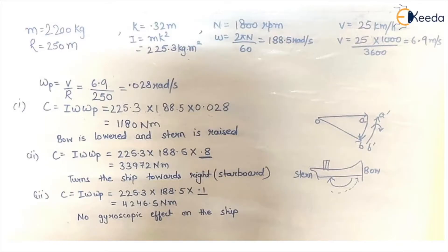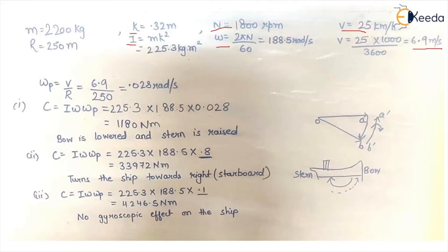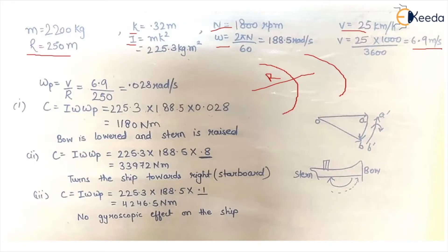First, we write all the given data: mass, radius of gyration k, and n, so we can calculate omega = 2πn/60. The velocity of the ship's turn is 25 km/h; since we use the SI system of units, we convert it to meters per second. We can calculate the moment of inertia I = mk². The radius of curvature R is 250 m, and the ship's speed along this path is v. The angular velocity of precession equals v/R.